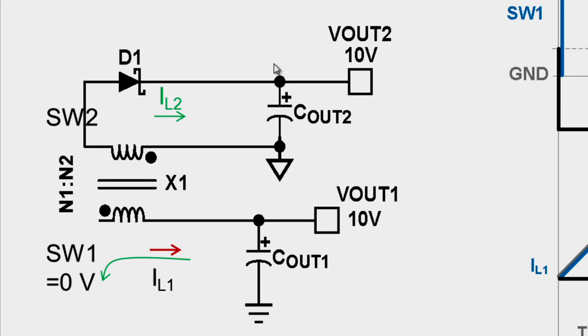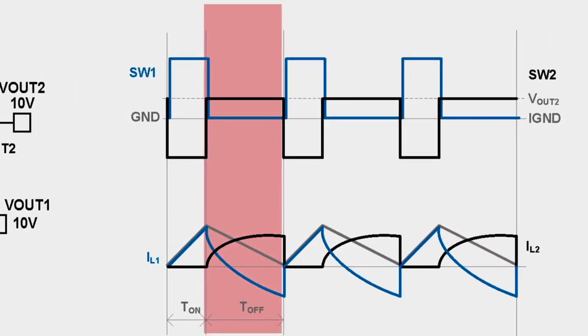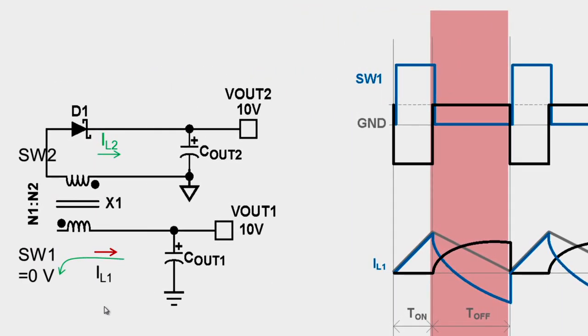The regulation of the secondary side happens in the second subinterval, when the primary output capacitor is effectively connected to the secondary output capacitor. The black waveform shows the current in the secondary winding. The gray waveform is the magnetizing current of the inductor, and the primary winding current is the sum of the magnetizing current and the secondary reflected current, which is shown in blue here.